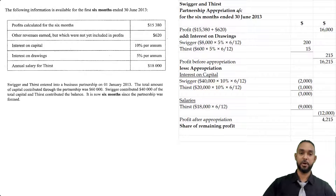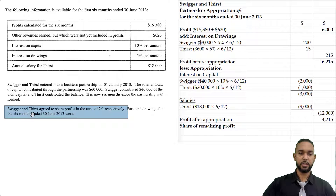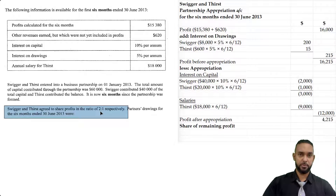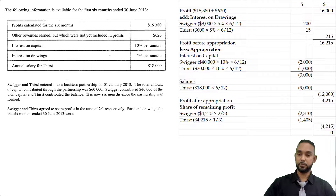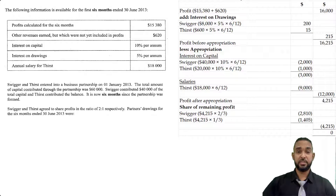We share the remaining $4,215 in the ratio two to one — two plus one equals three, so it's a two-thirds/one-third split. Swigger gets two-thirds of $4,215 and Thirst gets one-third. When totalled, it adds up to $4,215, which when subtracted from the appropriation leaves nothing remaining in the account.